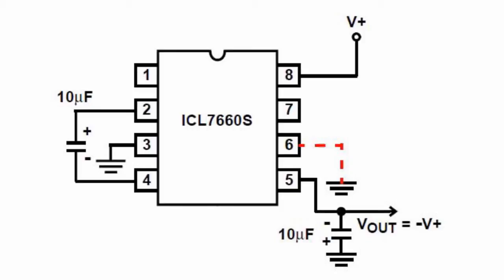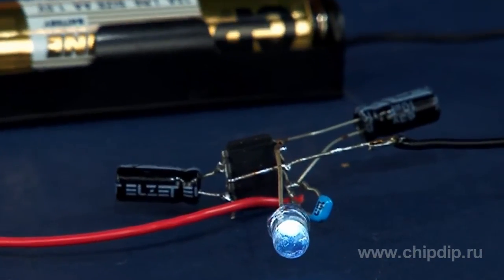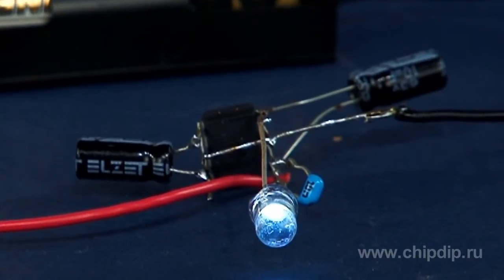At the load, the voltage converter ICL7660 can use LED as an indicator of voltage, which can be used in household appliances with a supplied voltage of 1.5 volts. The circuit is rather simple.